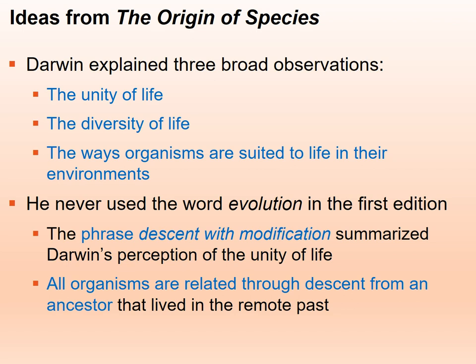In the Origin of Species, Darwin explained three broad observations: the unity of life, the diversity of life, and the way organisms are suited to life in their environment. He never really wrote the word 'evolution' — it came later. He used the phrase 'descent with modification,' which summarized his perception of the unity of life. He refers to the view that all organisms are related through descent from an ancestor that lived in the recent past.